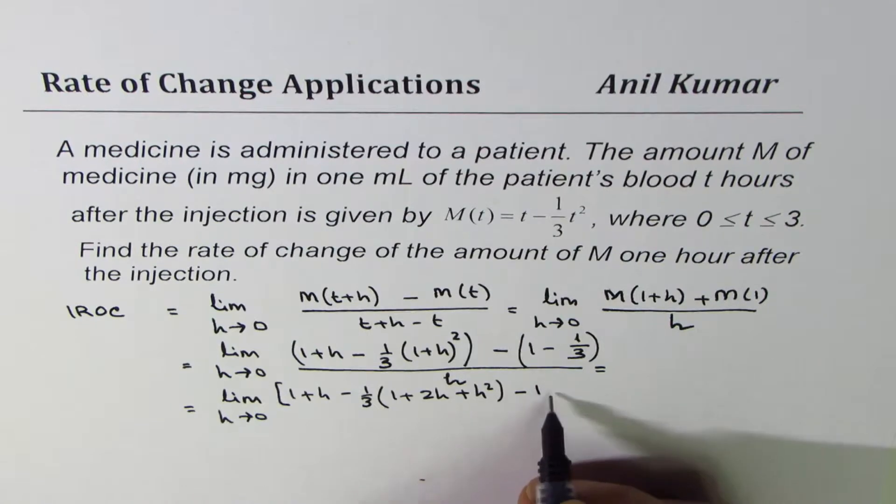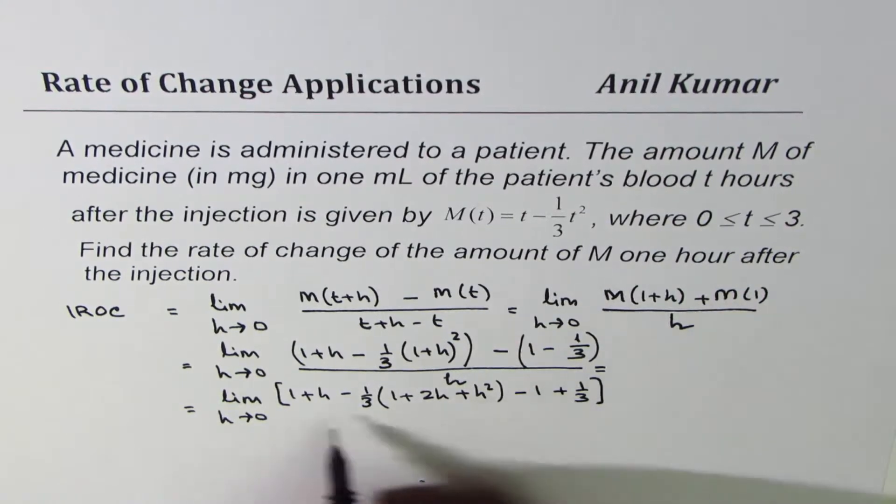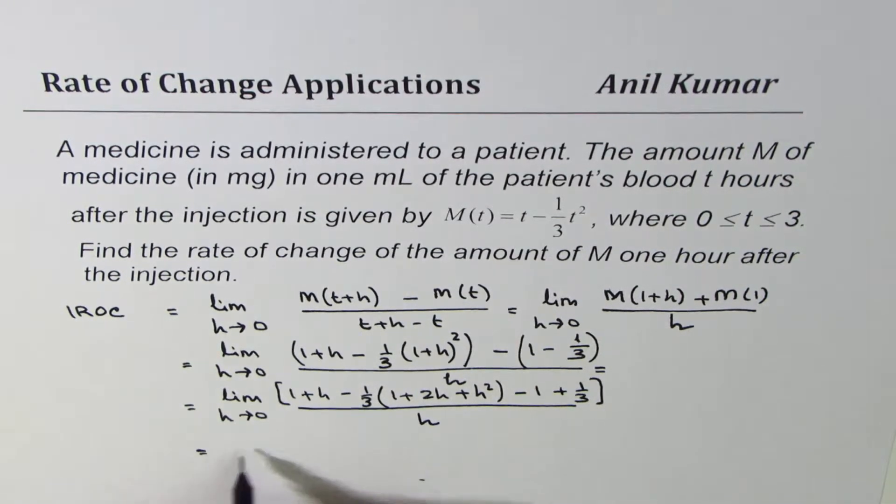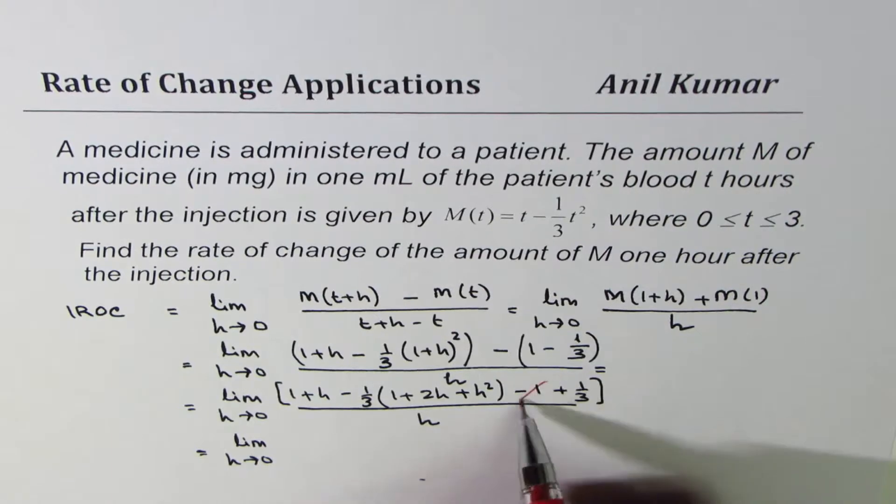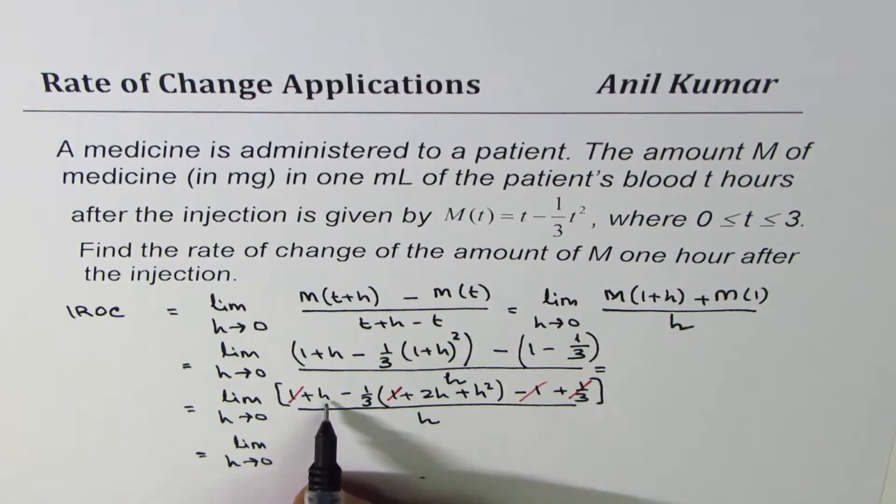Minus 1 + 1/3, great. Everything divided by h, here like this, correct? So this equals limit h approaches 0. So minus 1 and 1 cancels, 1/3 cancels with this, right? So you're left with h.